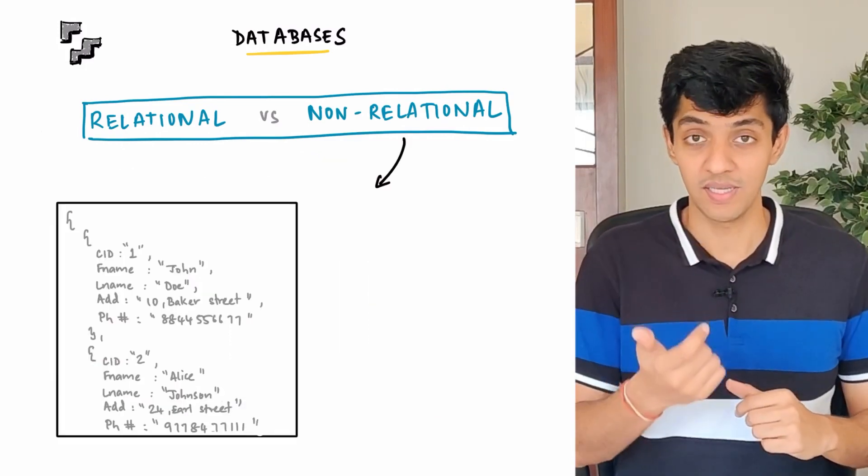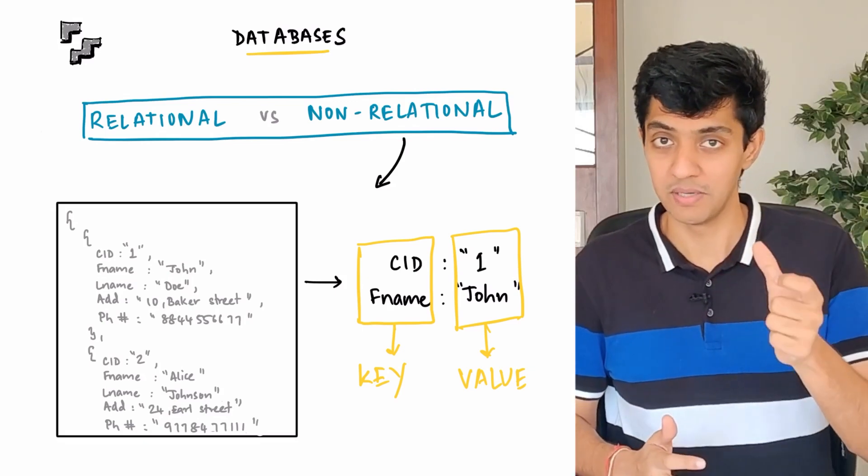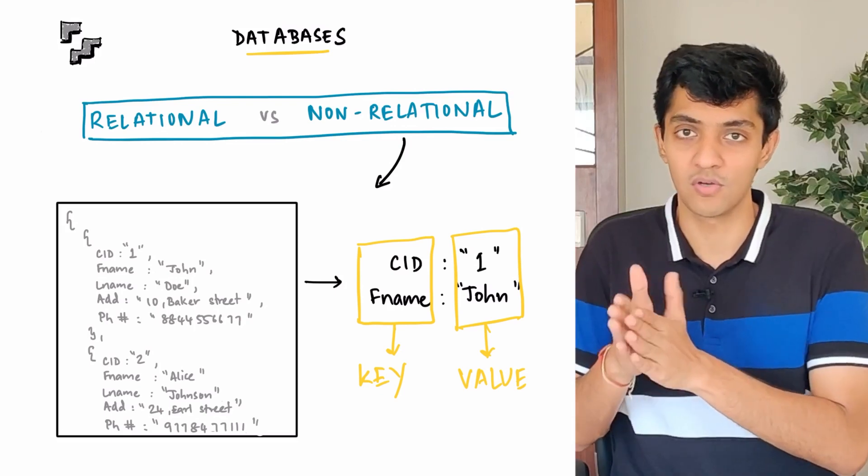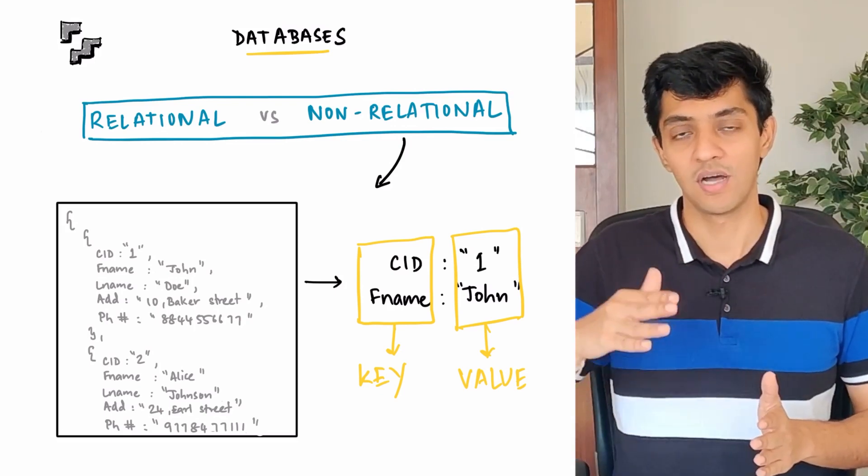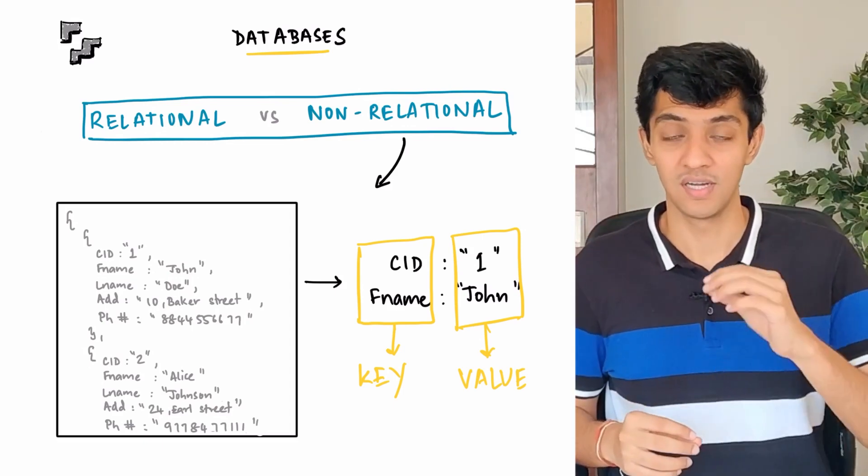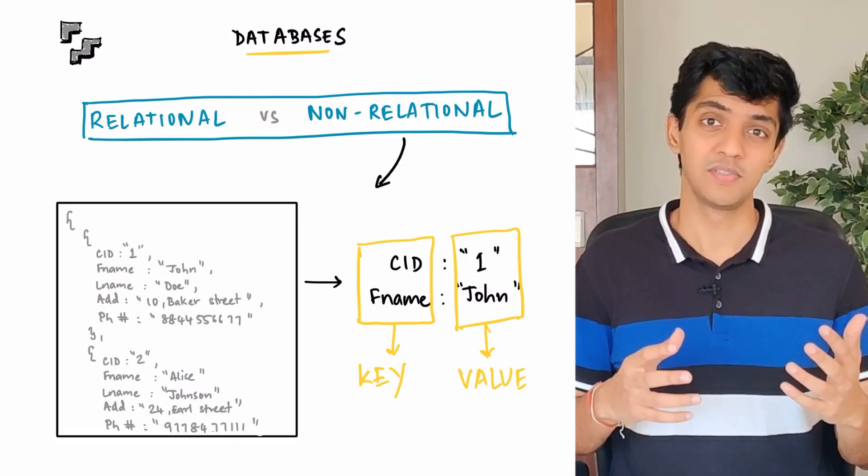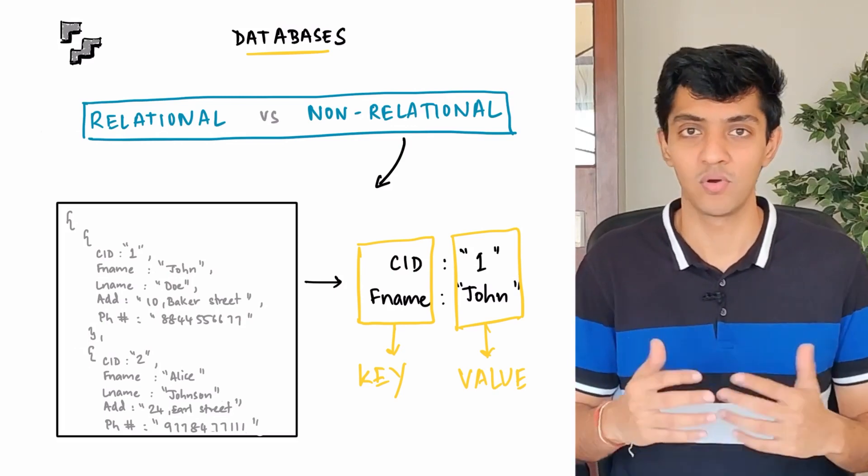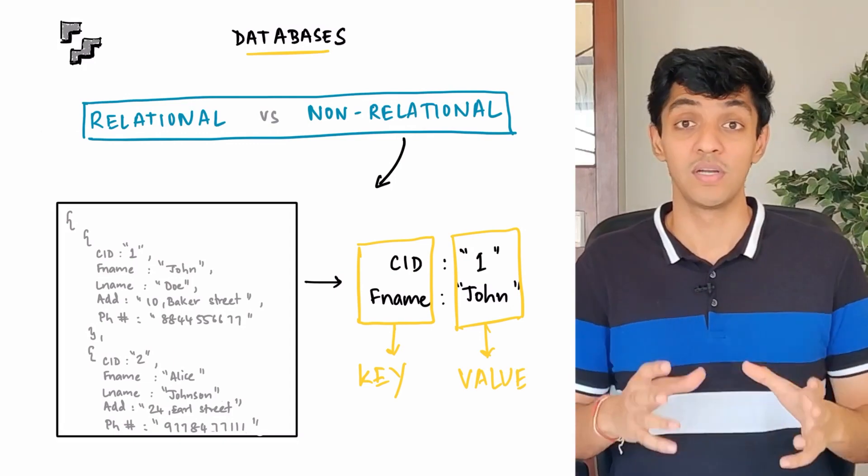A JSON object or a key value pair would look something like this. If you notice here, the customer name, which in our previous relational database we saw as a column name is now what is called a key because anything that falls below the colon or before the colon is called a key. And anything that falls after the colon is called the value for that key. And each of those records that you saw in the relational database is essentially what is called one object. With non-relational databases, we cannot relate one table or one object to the other, hence making them what we call unstructured data. So that is actually the biggest difference between the two databases.